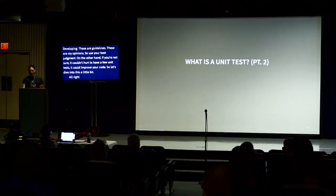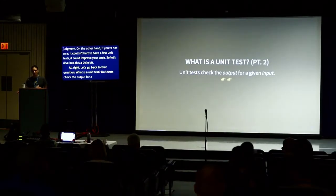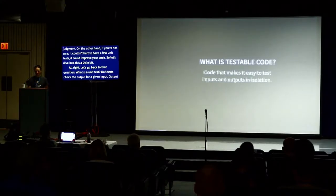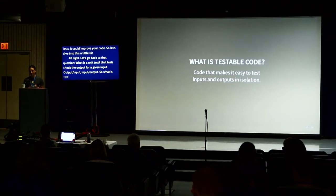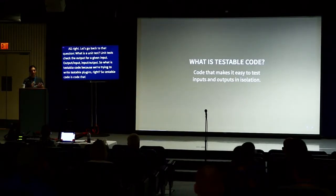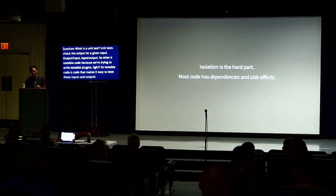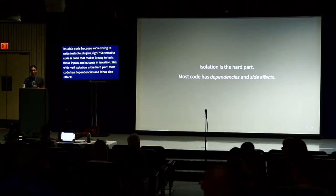Let's go back to that question: what is a unit test? Unit tests check the output for a given input. So what is testable code? Testable code is code that makes it easy to test those inputs and outputs in isolation. Isolation is the hard part. Most code has dependencies and it has side effects, especially WordPress code. Let's talk about those.